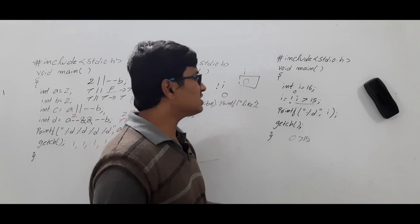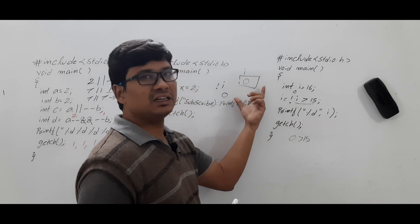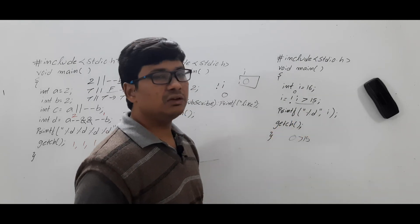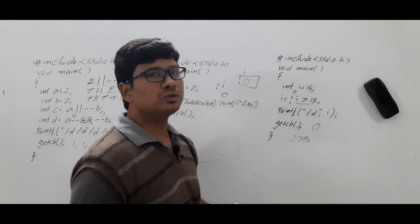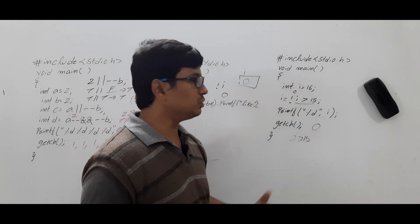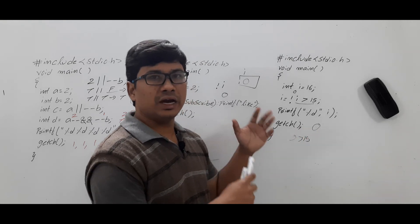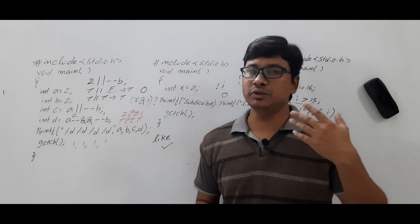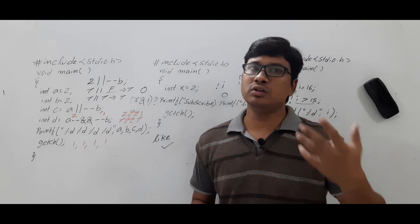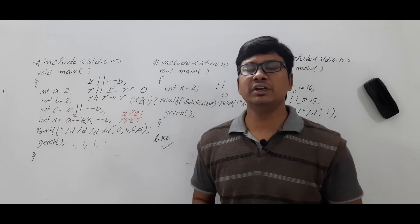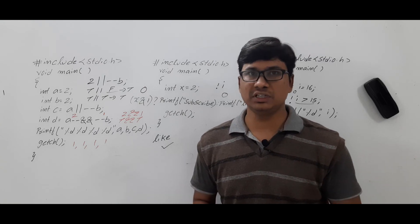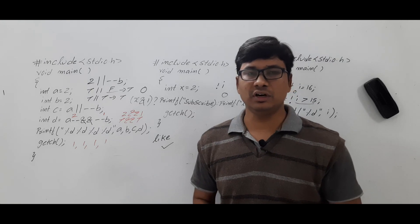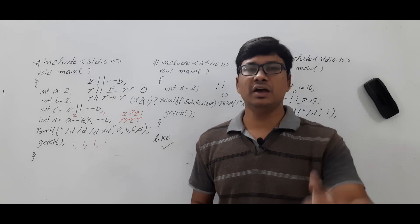If the entire expression were true, i would get the value 1, but since the condition is false, i gets 0. If you print i, you will get 0. I hope you have understood these three questions. These kinds of questions are useful for students preparing for placements and interviews. If you still have any doubts, feel free to ask in the comment section. I request everyone to execute these programs and check the output. Thank you for watching the complete video. Have a nice day.